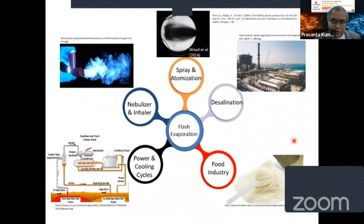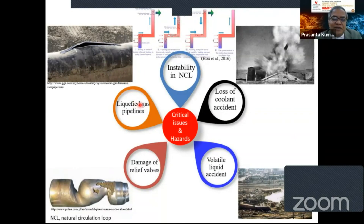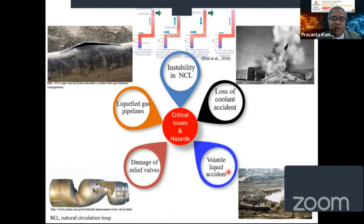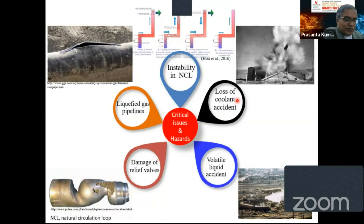Flashing is not always desirable. As there is production of vapor from the liquid phase, there is a large generation of volume that gives rise to damage and catastrophic failure — we can see some damage in pipelines, valves, etc. There could be volatile liquid rapid evaporation that could be hazardous, or catastrophic failure due to loss of coolant accidents. One needs to have good knowledge of flashing and good control of it — both for utilizing it beneficially and for preventing it from causing damage.